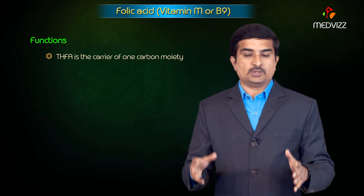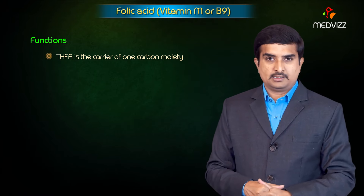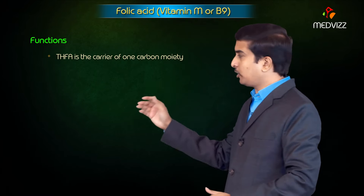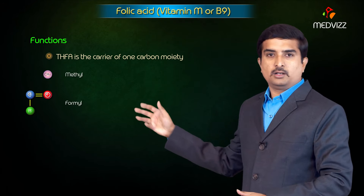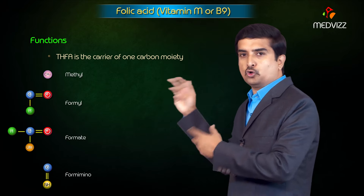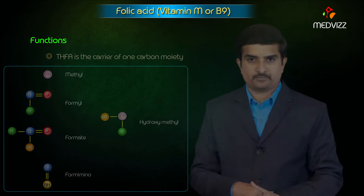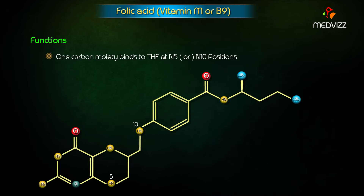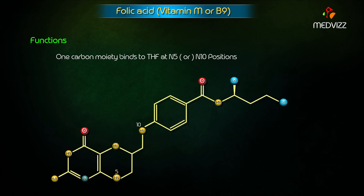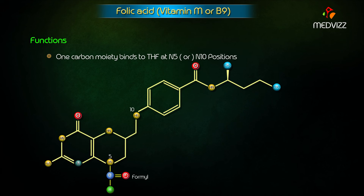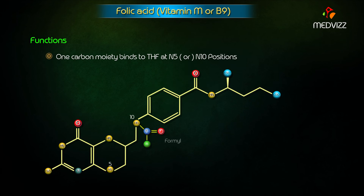The functions of folic acid: tetrahydrofolic acid, the active form, is a carrier of one carbon moiety such as methyl, formyl, formate, formamino, or hydroxymethyl groups. These one carbon moieties bind to tetrahydrofolate at the N5 position or the N10 position, and sometimes both. At N5: formyl, formamino, or methyl; at N10: formyl.